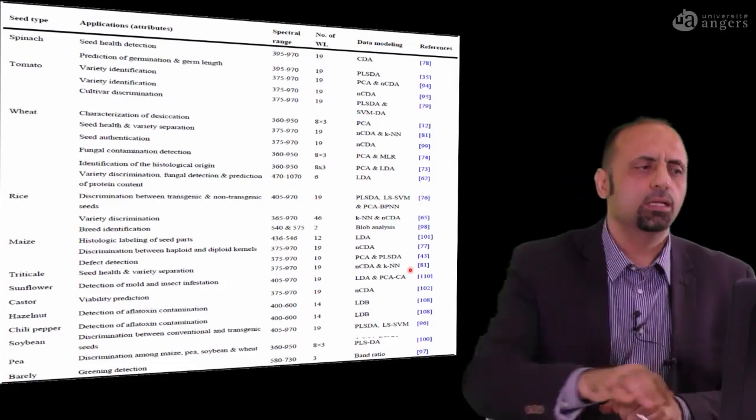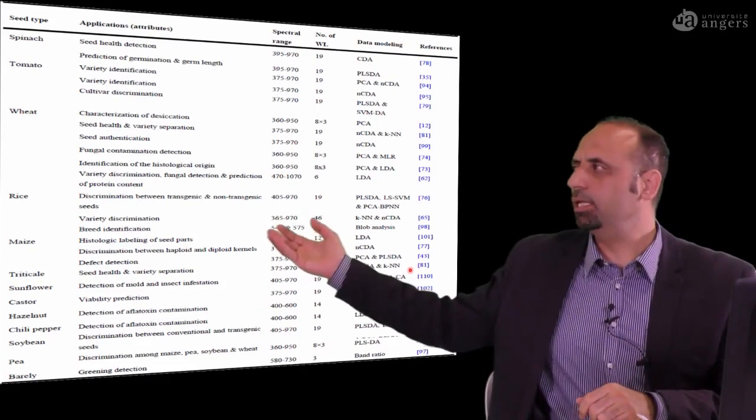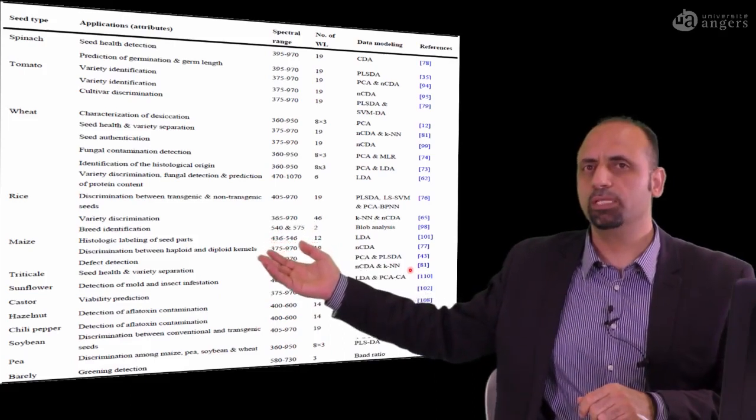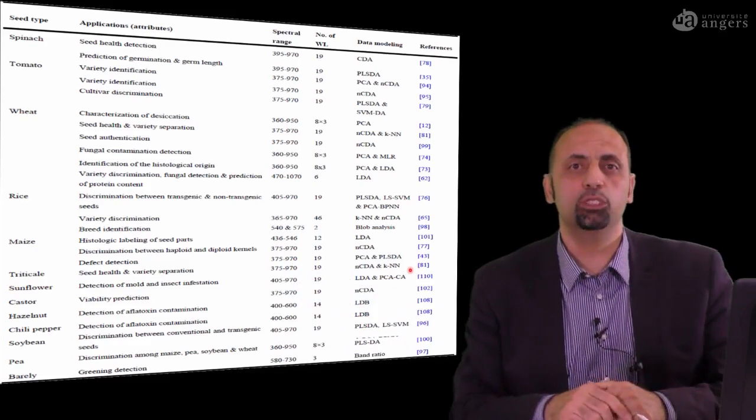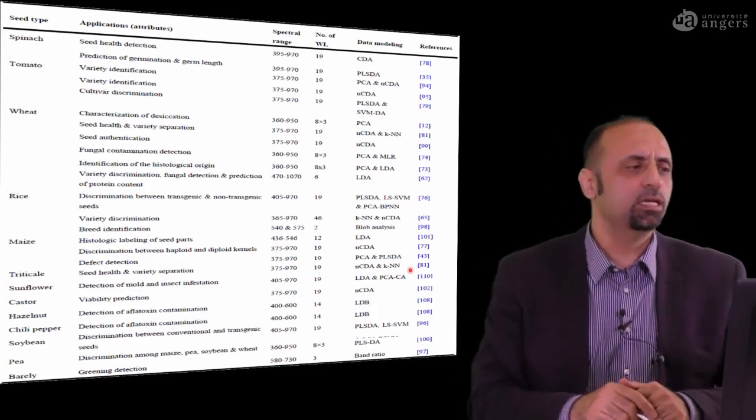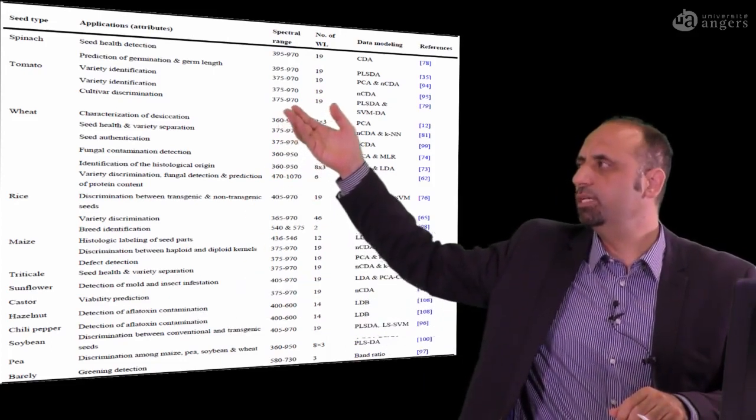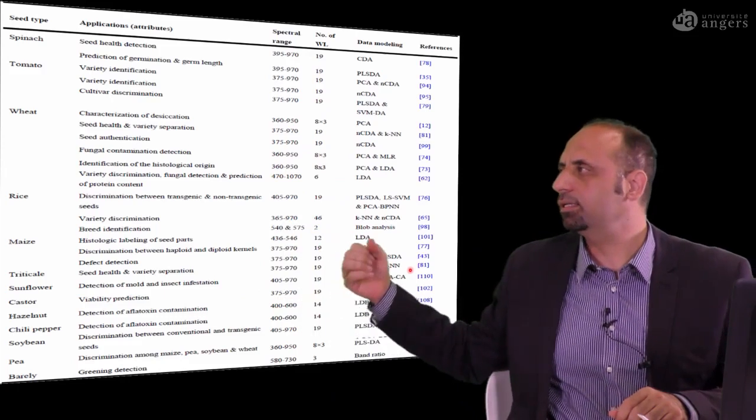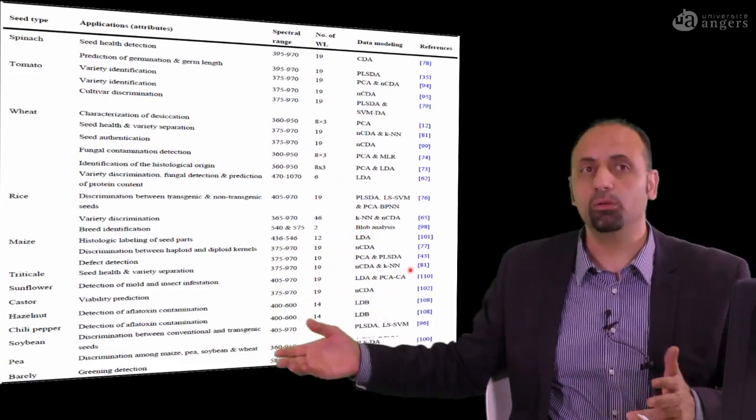We are going to use here what is called illumination-based system. We carry out the literature review about using this technology, multispectral imaging, for quality evaluation of different sorts of seeds. It is already successfully implemented for quality evaluation of seeds of spinach, tomato, wheat, rice, castor, chili, peas, a lot. We are going to use this technology for cowpea seeds quality evaluation.